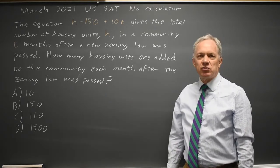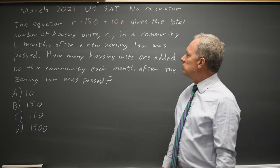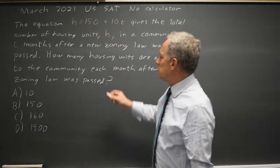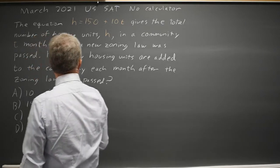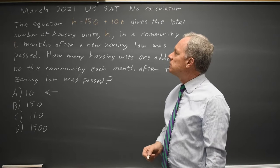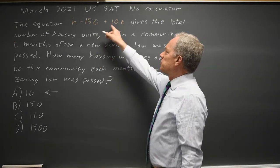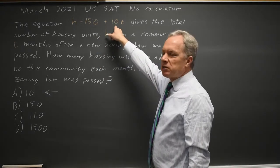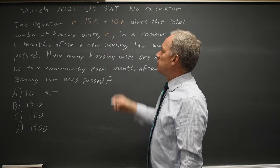What they're asking here is the slope, which is 10. If you recognize that the increase per month is the slope, y equals mx plus b, in this case m is 10 because it's the value multiplied by our variable.